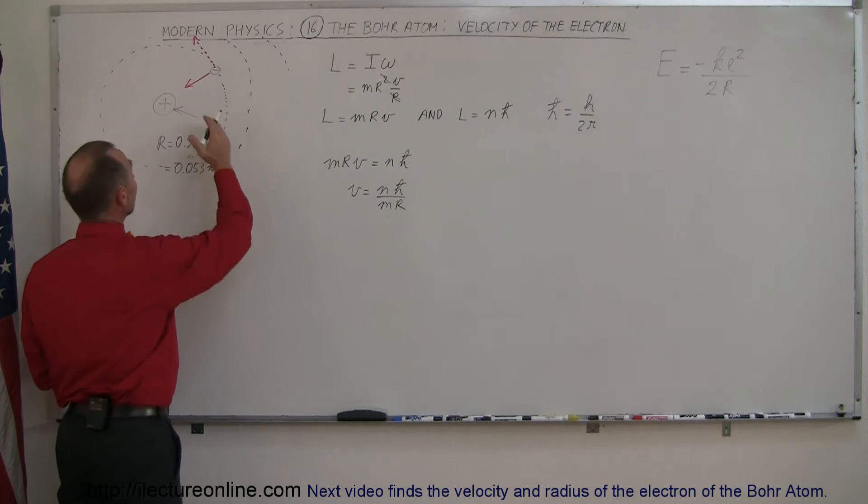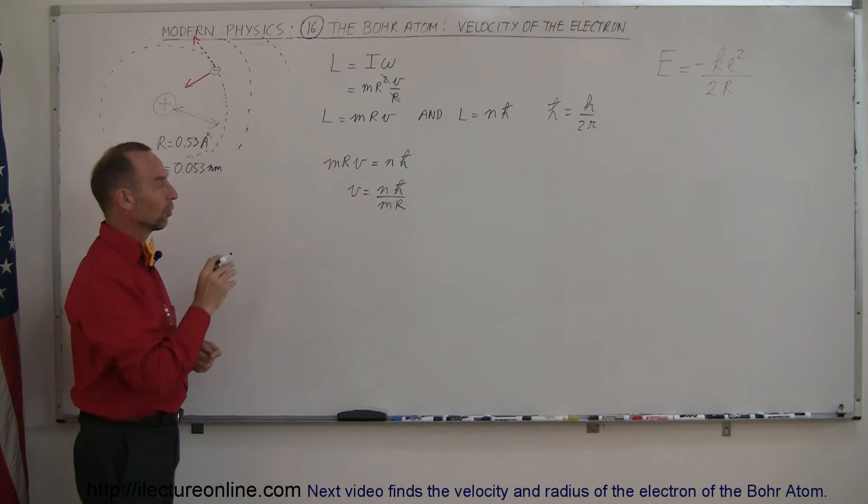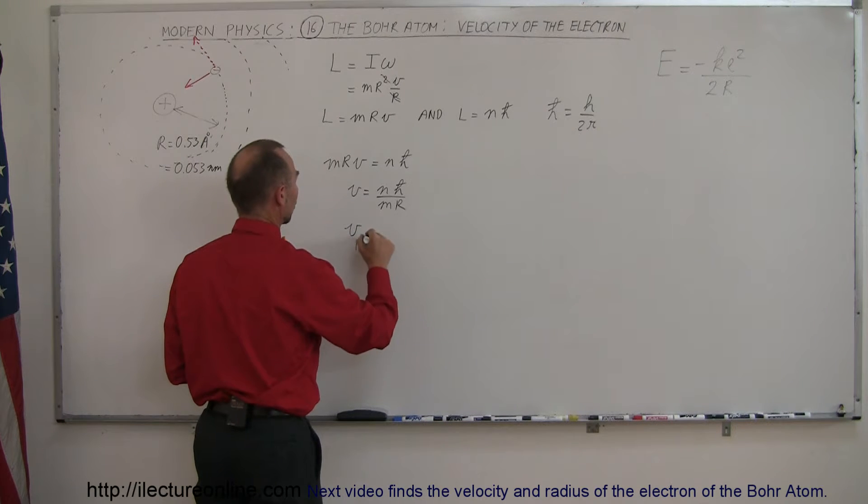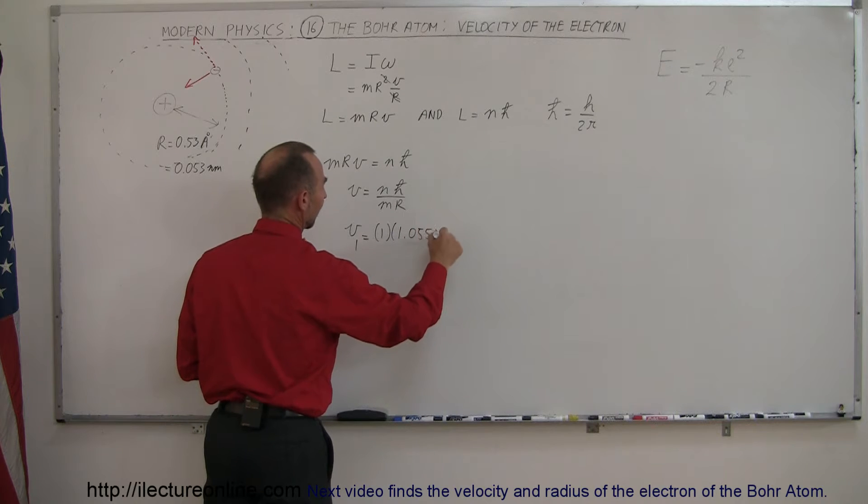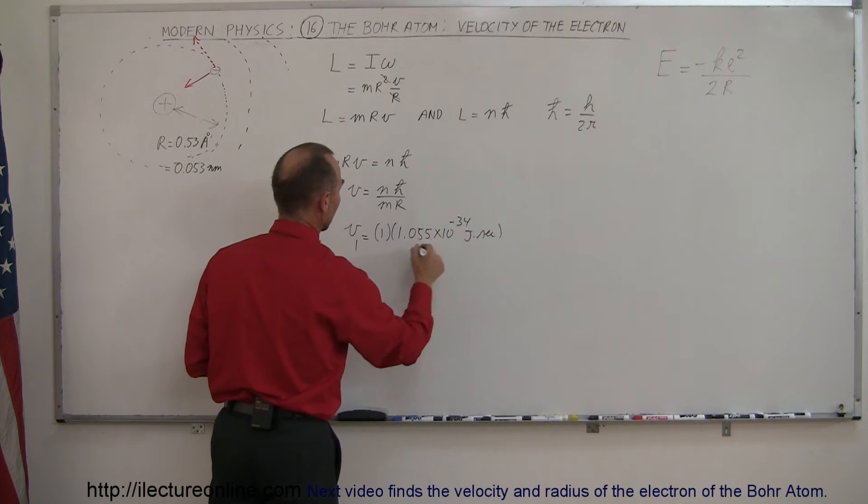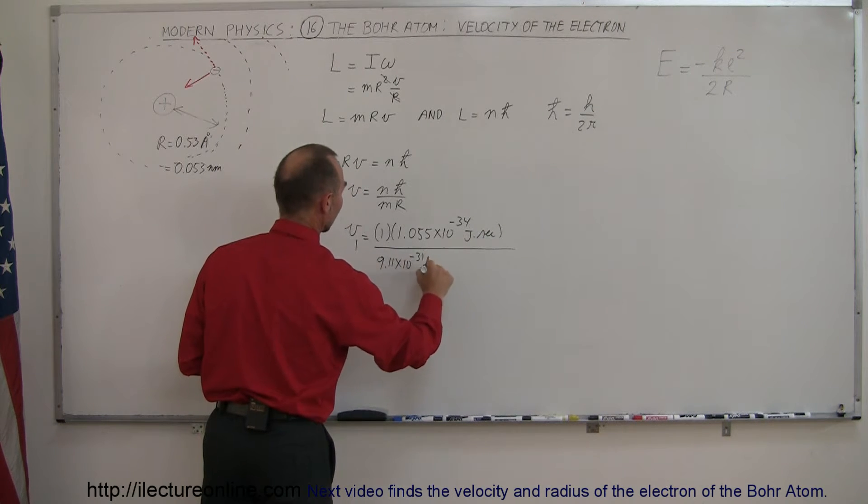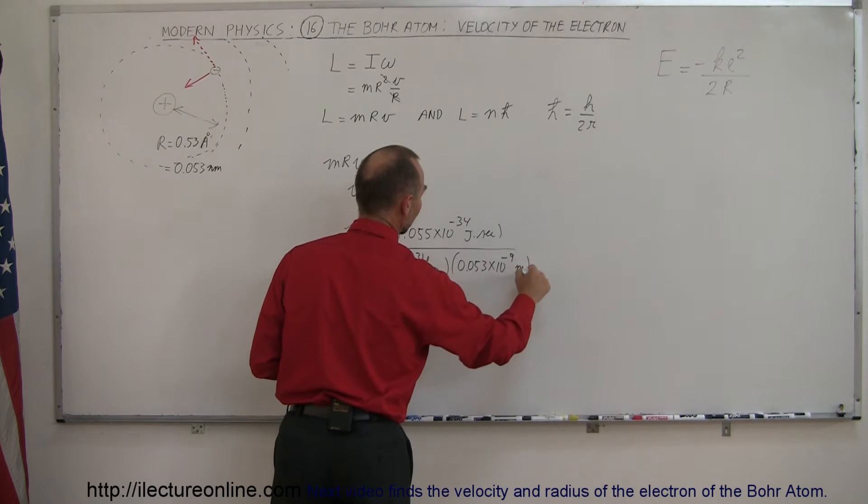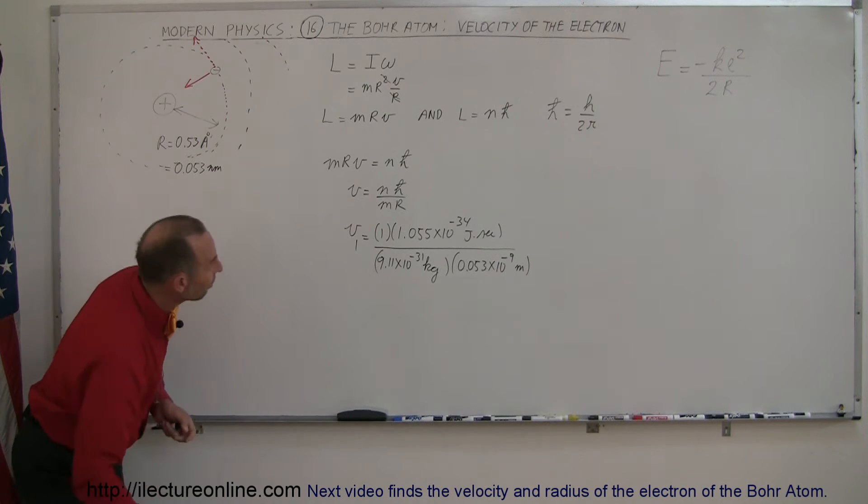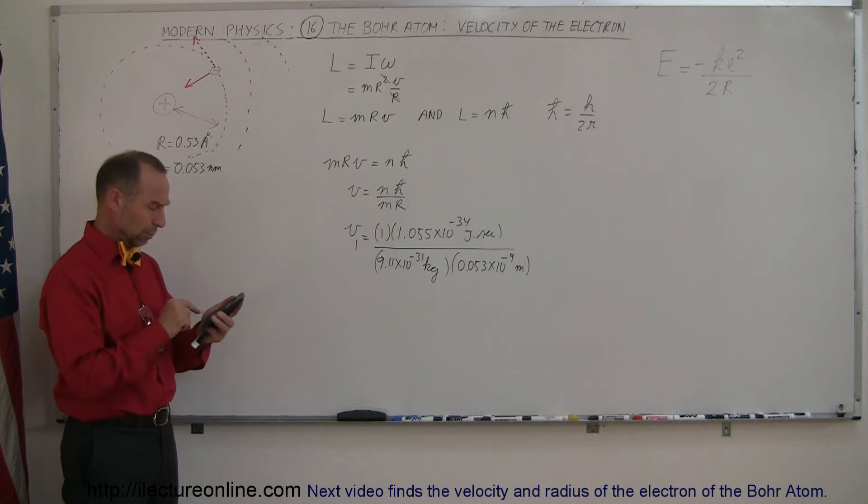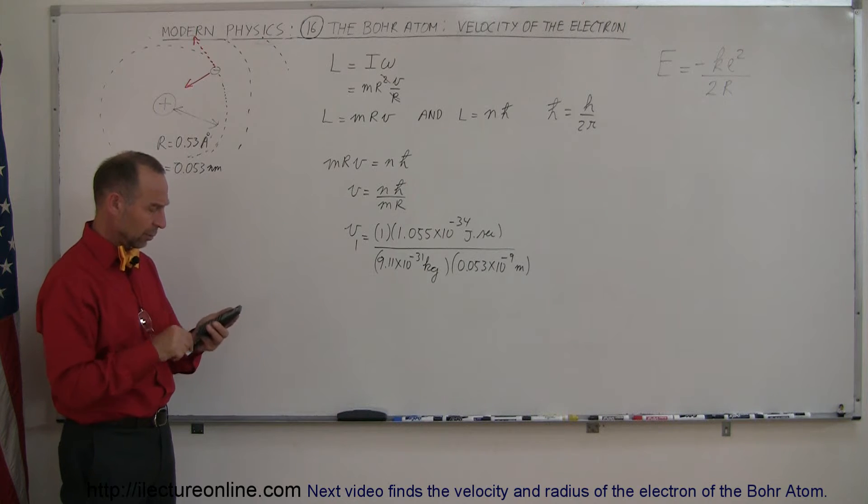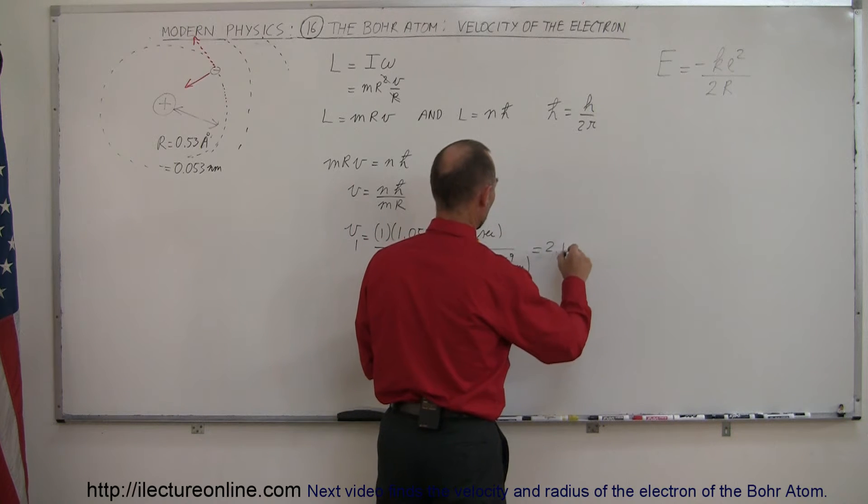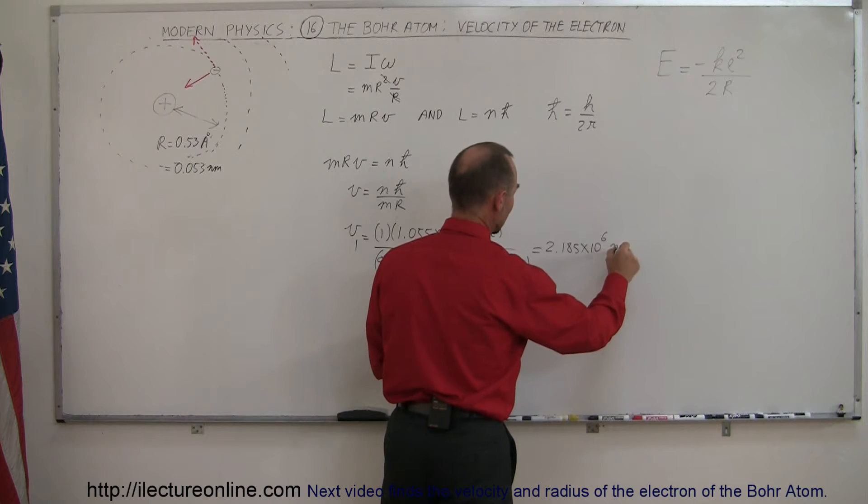All right, let's now plug in the values for the first orbit. The radius is of course 0.053 nanometers, so n being 1 for the first orbit. We could say that v for the first orbit is equal to 1 times 1.055 times 10 to the minus 34 joules times seconds, divided by the mass, 9.11 times 10 to the minus 31 kilograms, and then r, now we know that to be 0.053 times 10 to the minus 9 meters. So what is the velocity of an electron like that? 1.055e-34 divided by 9.11e-31, and divide by 0.053e-9 equals, and the velocity would be 2.185 times 10 to the 6th meters per second.